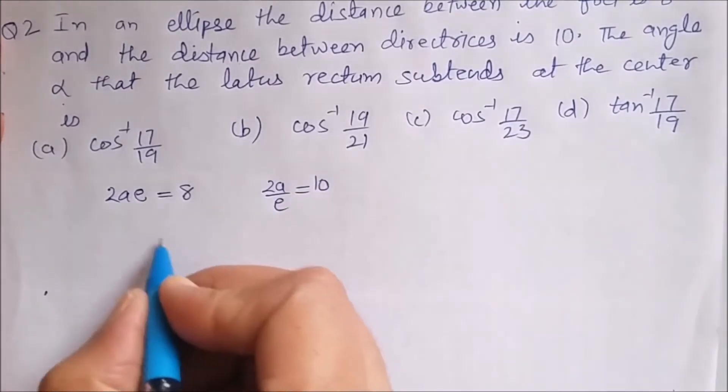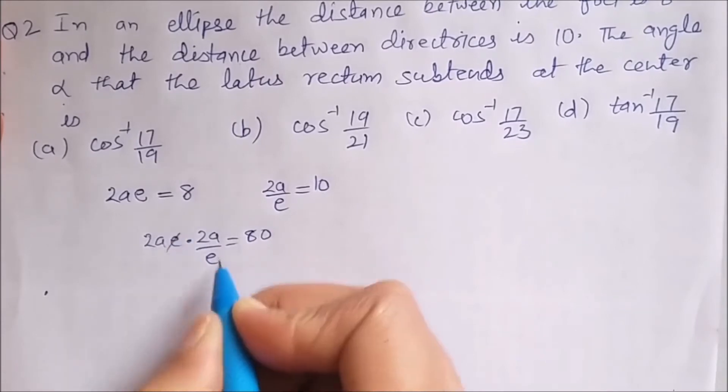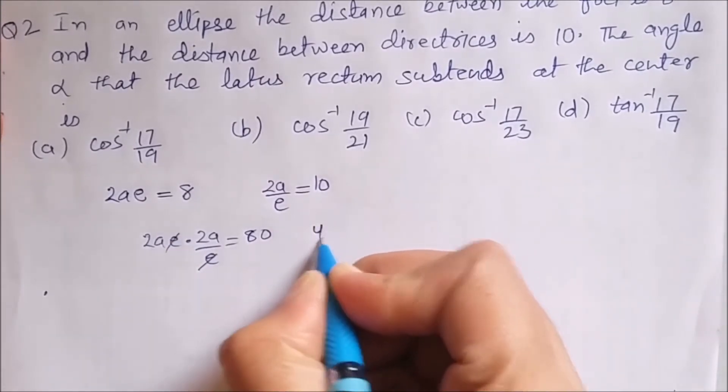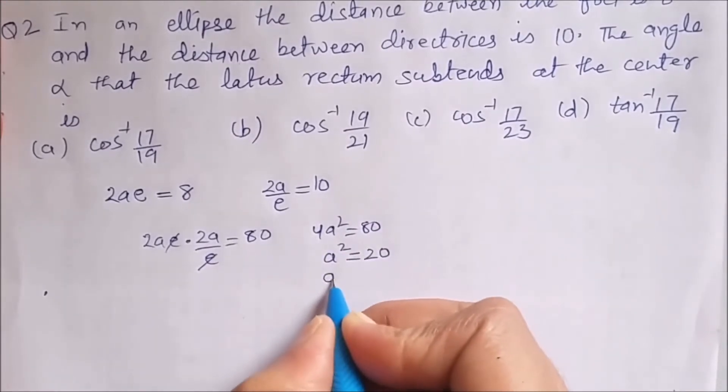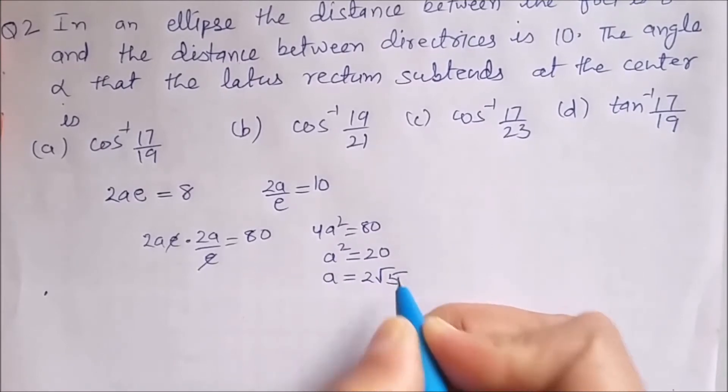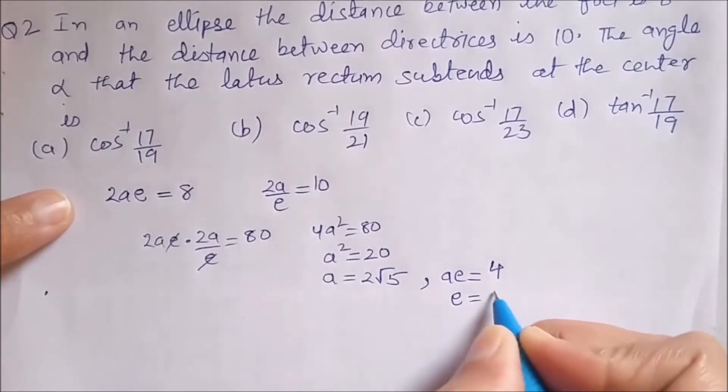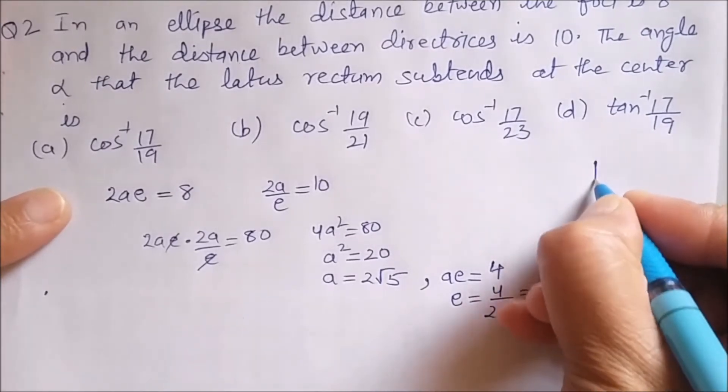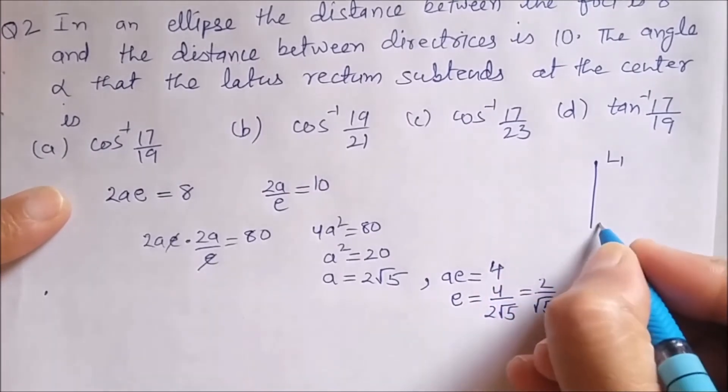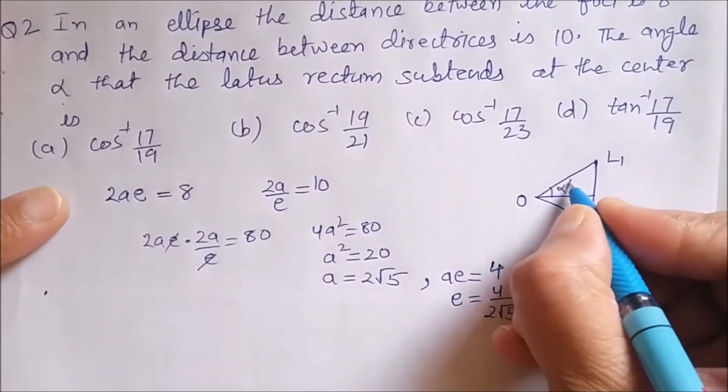If we multiply these two equations we will get 2ae × 2a/e = 80. So this e and e will go and we will get 4a² = 80 or a² = 20 or we can say that a will be 2√5. This will give me ae = 4 and this will give me e = 2/√5. Now let us consider the right triangle. Suppose these two are latus rectums. This is L1, this is L2 and this is O.